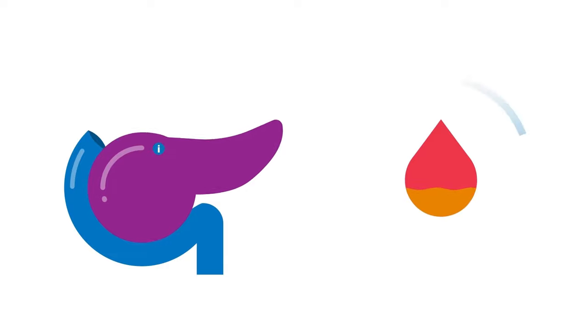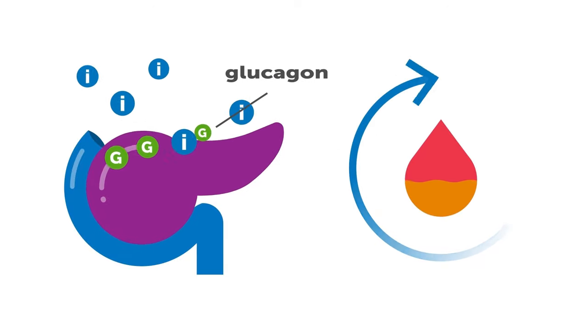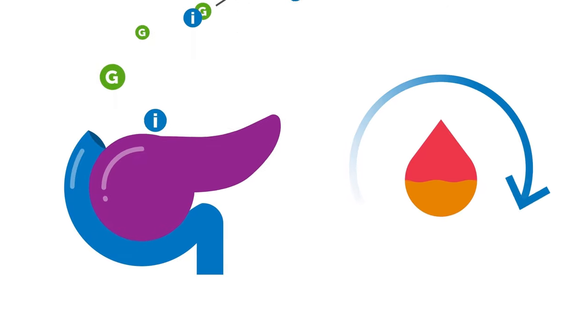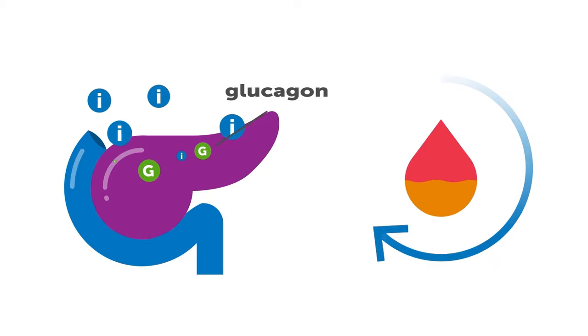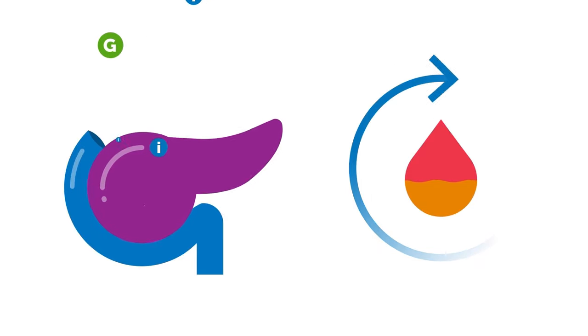In people without diabetes, the glucose level in the blood stimulates insulin production in the pancreas. Insulin and glucagon, both hormones, are produced in the pancreas and are responsible for the balance of the glucose levels.